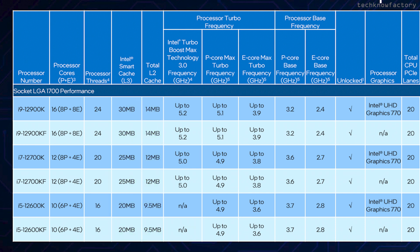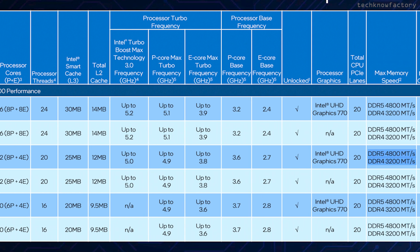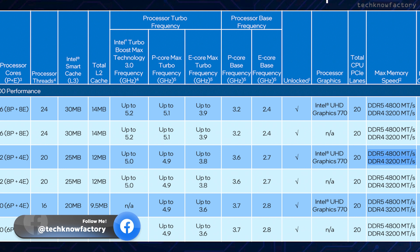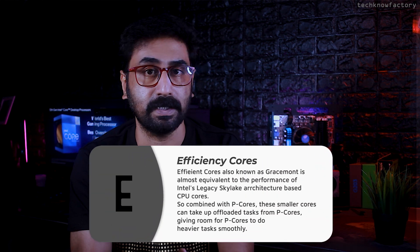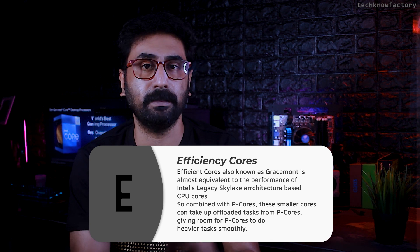Looking at frequencies, you can clearly see four separate speed values: E-core base frequency, P-core base frequency, E-core maximum turbo frequency, and P-core maximum turbo frequency. For the i9-12900K, Performance cores run from 3.2GHz base to 5.1GHz turbo, while Efficiency cores run from 2.4GHz to 3.9GHz.